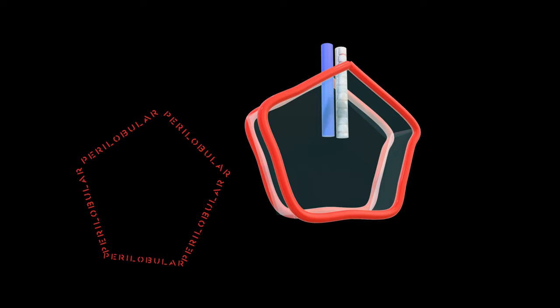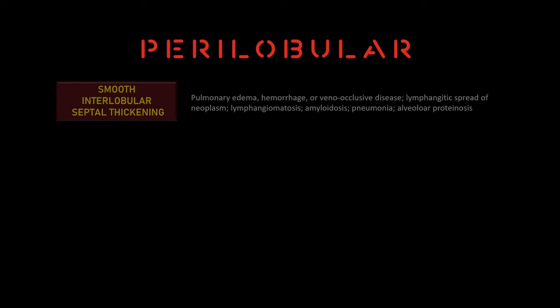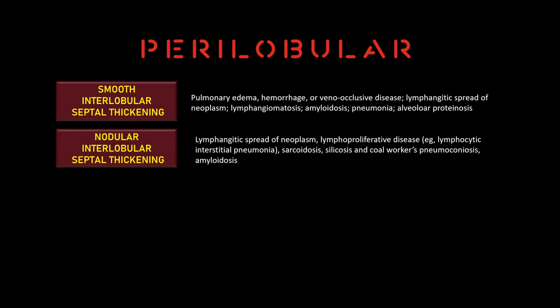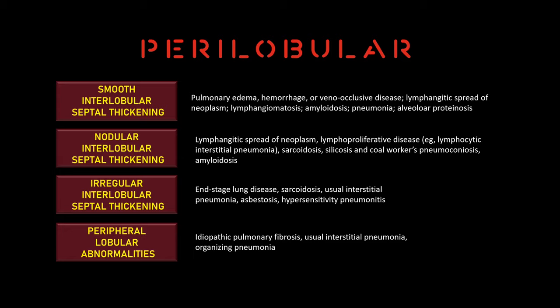Like I said before, the structures that are in periphery of the SPL are called perilobular. There are many causes for the perilobular diseases, and they are subdivided in smooth interlobular septal thickening, nodular interlobular septal thickening, irregular interlobular septal thickening, and peripheral lobular abnormalities. The objective of our class is not to discuss each one of these diseases. Maybe, in the future, we can dedicate a lecture only to talk about the secondary pulmonary lobule.